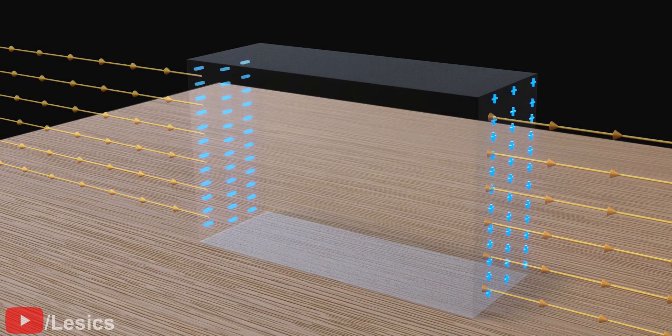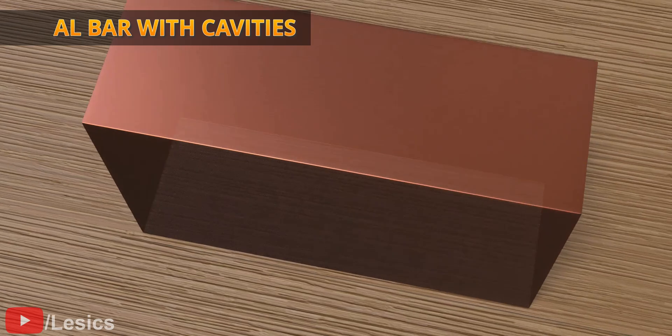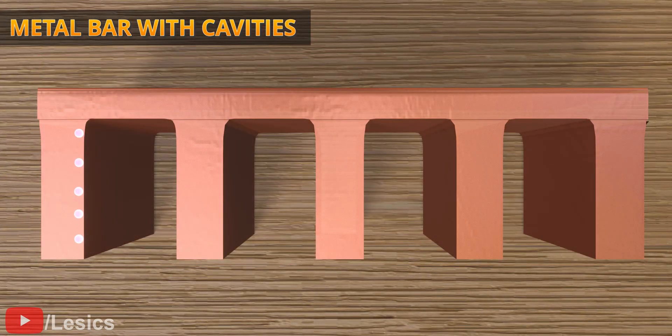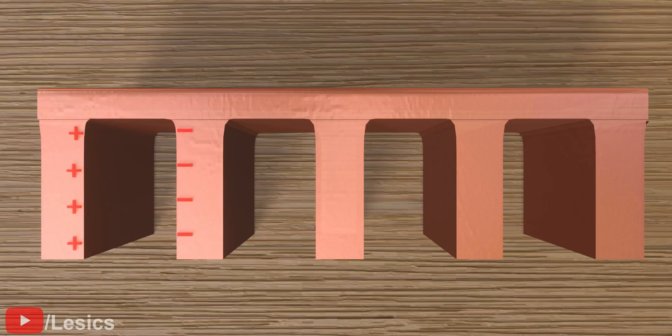Now, let's examine a slightly different case, a metal bar with many cavities. Assume the electrons from one cavity's surface are displaced to the next surface due to some external force. As a result, an electric field will be present inside this cavity.